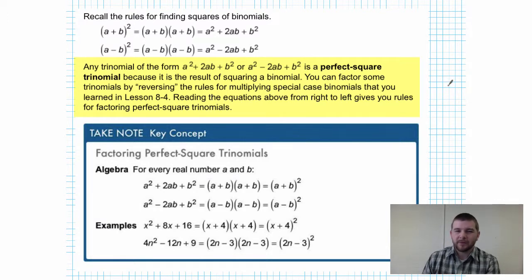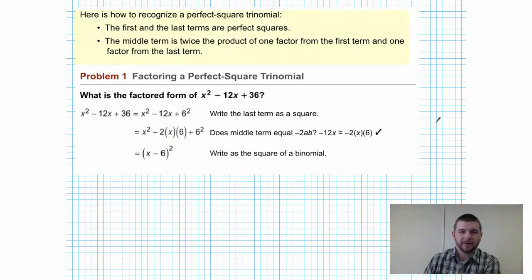You can factor some trinomials by reversing the rules for multiplying special case binomials that you learned in lesson 8.4. Reading the equations above from right to left gives you rules for factoring perfect square trinomials. What this really means is we're working backwards from what we may be used to, and if you can recognize the trinomial is of a special form, that can make it very easy to factor. Here's how to recognize a perfect square trinomial: the first and the last terms are perfect squares, and the middle term is twice the product of one factor from the first term and one factor from the last term.